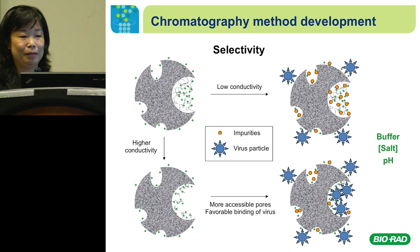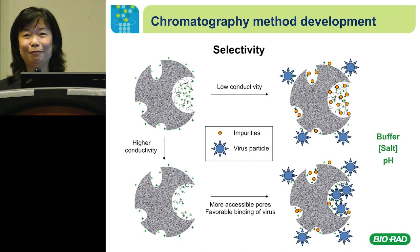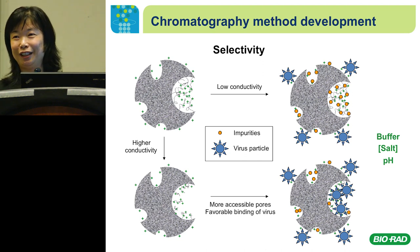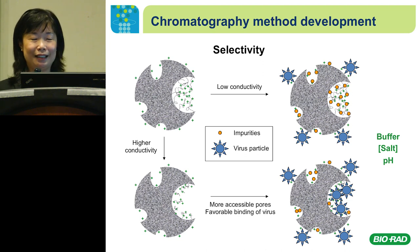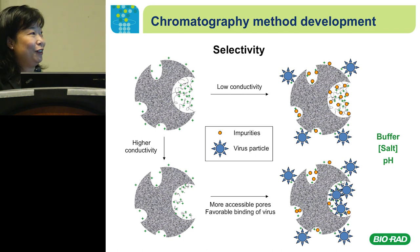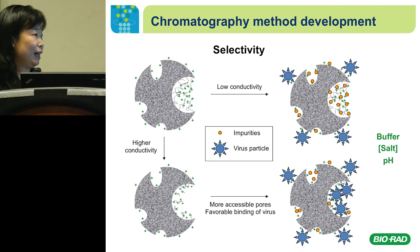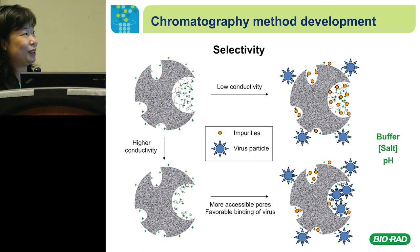Now I want to talk about method development. Selectivity is often achieved through method development. For IEX, we learned from school that to achieve binding you need low conductivity so all charged molecules are bound by the resin. But for virus purification, because virus particles are much bigger than small molecules, if you do low-conductivity binding, the small molecules get into the pores first and get bound, while viral particles probably hang around on the outer surface of the bead. This is probably why many people don't like to use the column — it doesn't give the binding capacity they want. For Nuvia VQ, because we have the surface extender, we can take advantage of the pore size and charges inside the cavity of the pores.